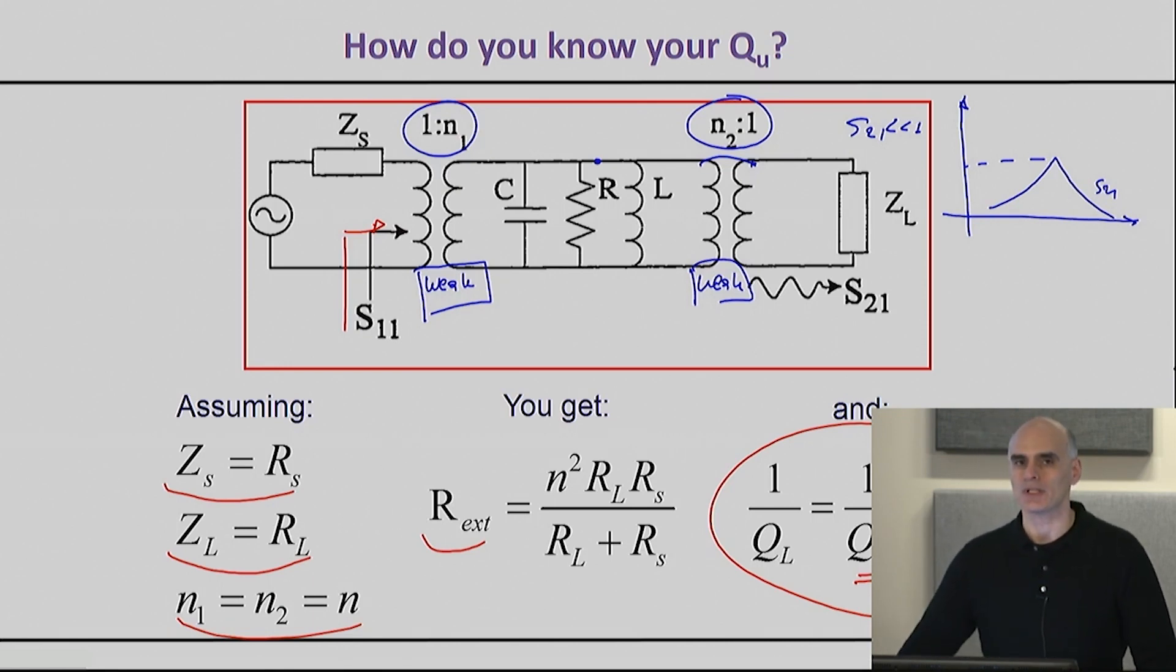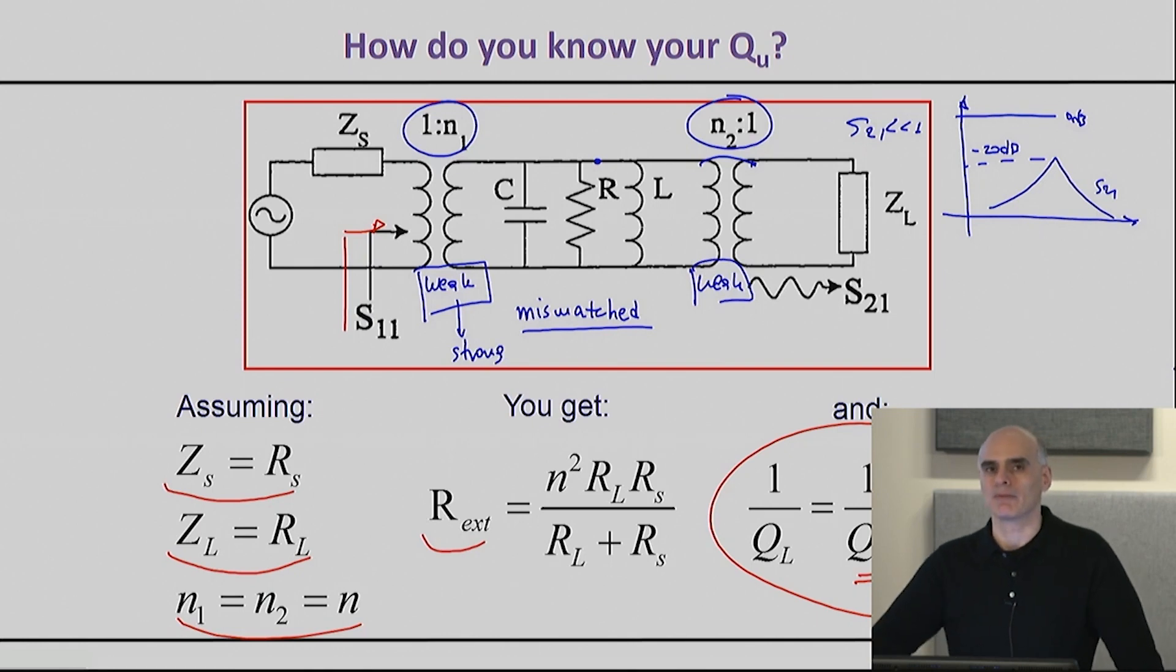When you make a measurement here, your S21 will appear that low, but that's not because the resonator is bad—that's because you purposely designed this to have a weakly coupled section. Or if you want to say it in different words, you have purposely mismatched the filter. So the loss that you see here—this may be the 0 dB line and you may be down to the -20 dB line—that loss is not ohmic loss, it's just mismatch loss. You know that you can fix that quite easily when you make the real filter by simply matching the circuit, by simply fixing the coupling from weak to strong.